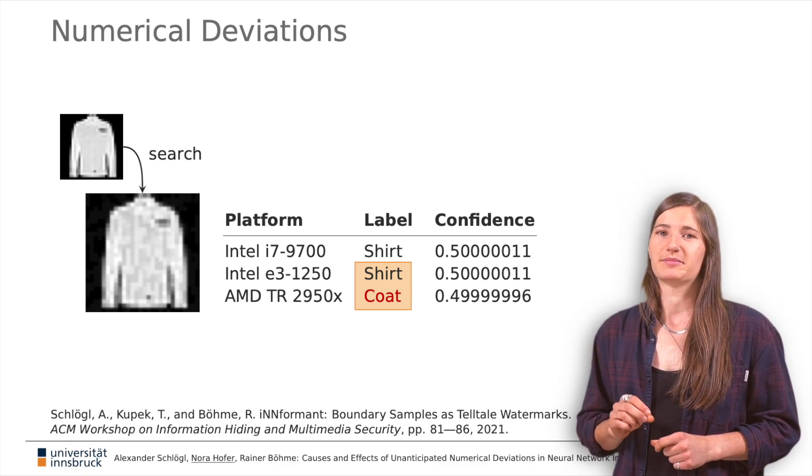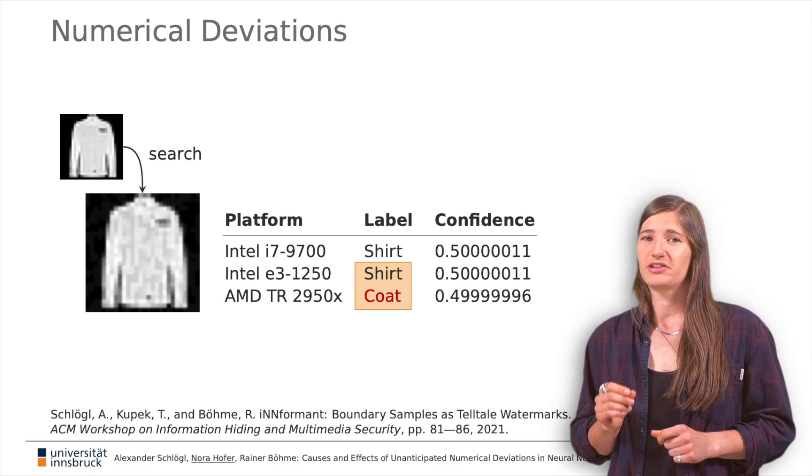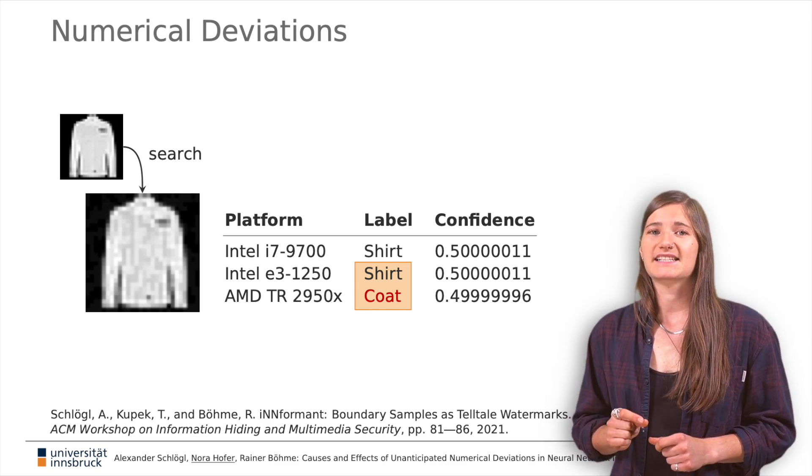This is where our NeurIPS paper makes its contributions. We offer the so far most comprehensive evaluation of causes and effects of numerical deviations in CNN inference.